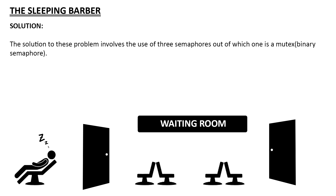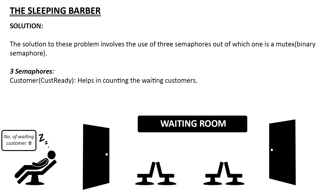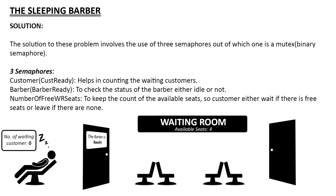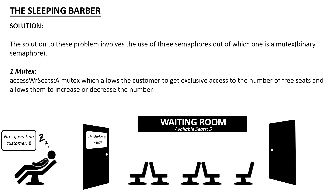The solution to these problems involves the use of three semaphores, one of which is a mutex, also called a binary semaphore. The first one helps in counting the waiting customers. The second one is to check the status of the barber, whether he is idle or not. The third one is to keep count of the available seats, so a customer either waits if there is a free seat, or leaves if there are none. Lastly, semutex allows the customer to get exclusive access to the number of free seats and allows them to increase or decrease that number.